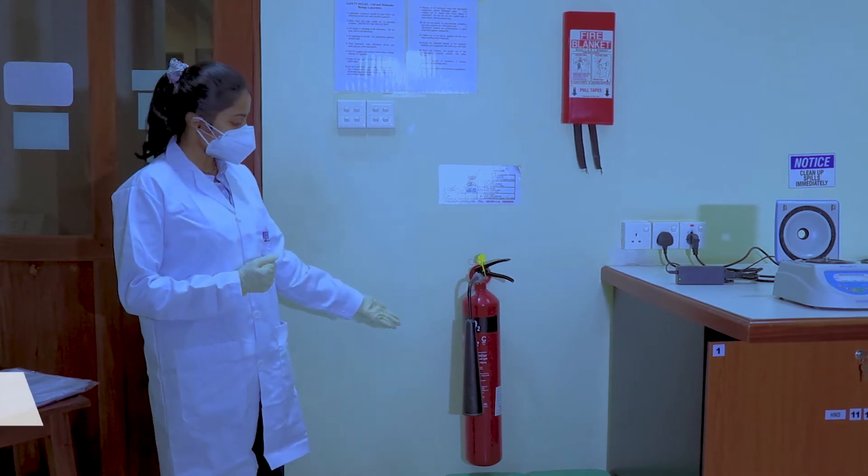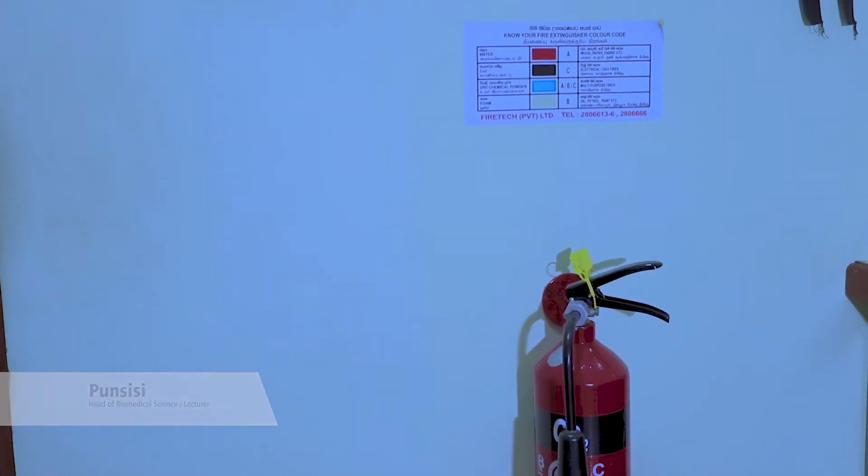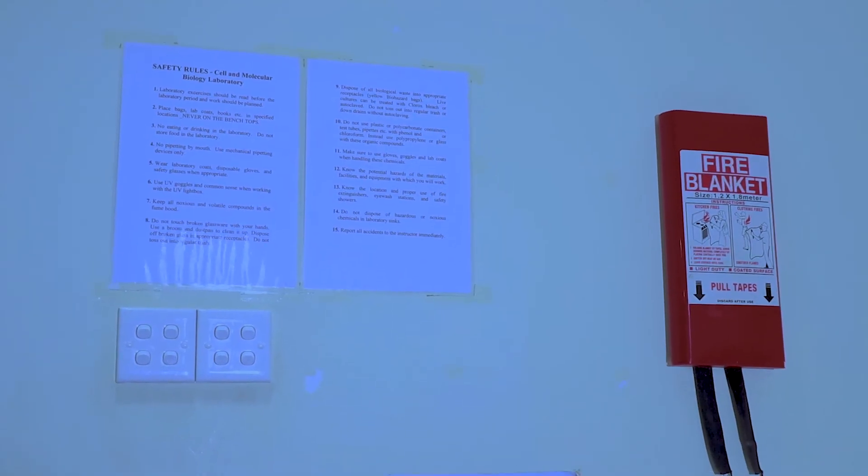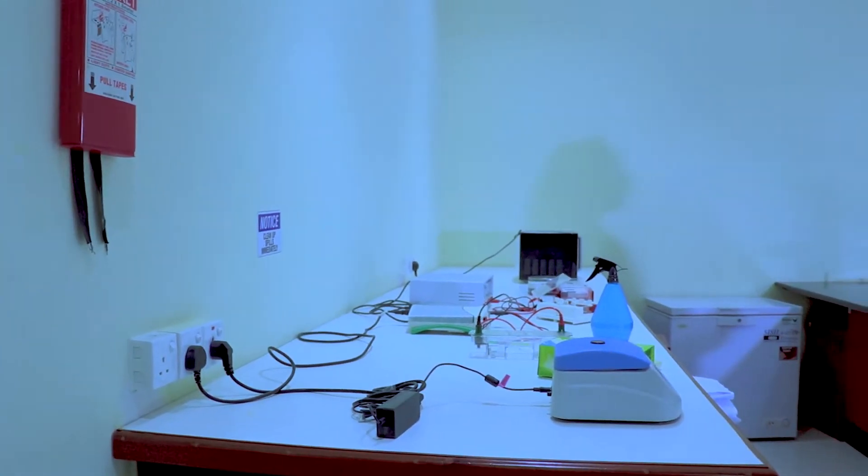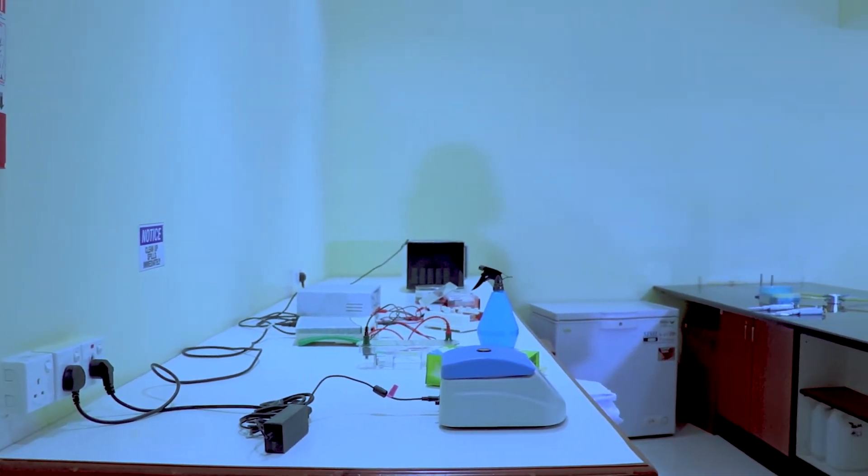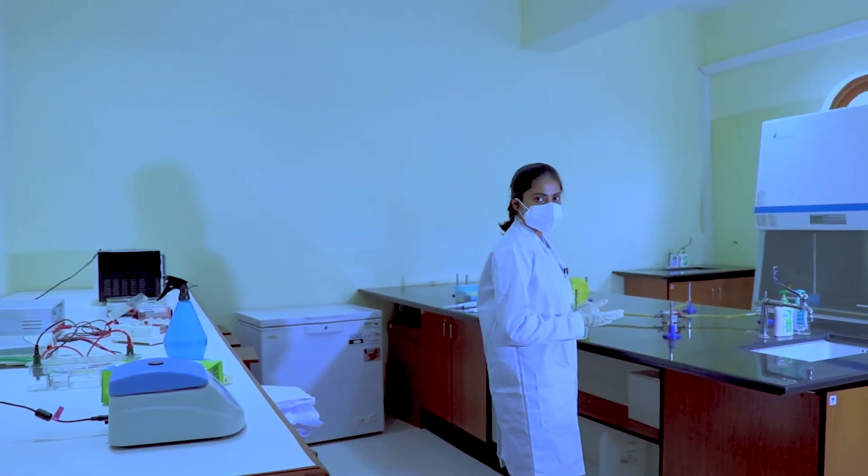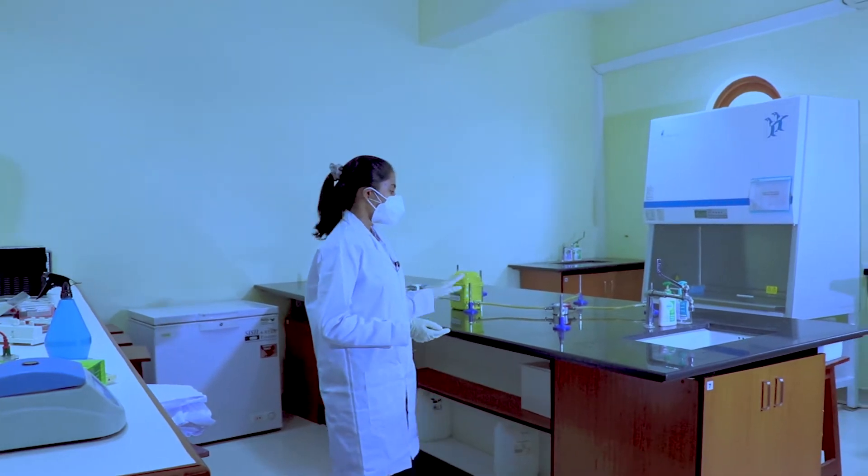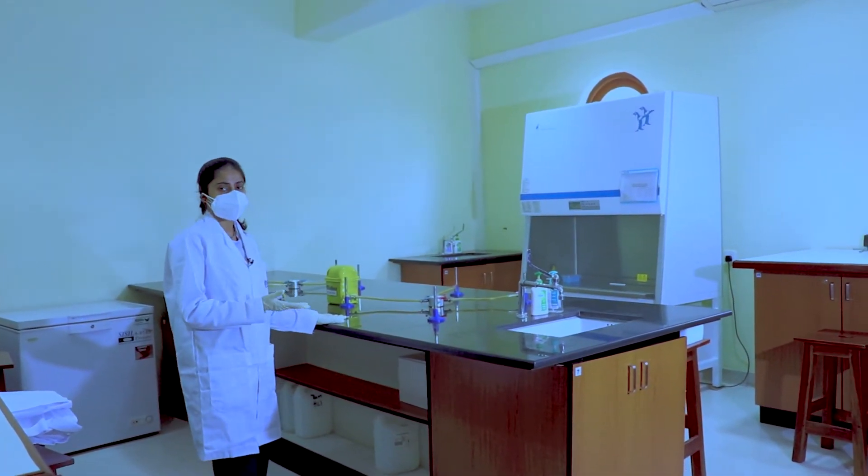On the left side you can see the fire extinguisher and the set of laboratory rules given for students. There are two sinks on the other side of the lab, and this is the working bench where students prepare their samples.